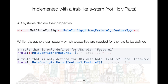The way this is implemented is with a trait-like system. AD systems declare their properties by creating a custom struct MyADRuleConfig which subtypes RuleConfig parameterized by a union of features that characterize the AD system. The rule authors can then specify the properties of the AD system required for the rule to be defined. For example, an rrule only defined for AD systems with Feature1 would have as its first argument a RuleConfig parameterized by a supertype of Feature1 — for example, a union of types which includes Feature1. An frule only defined for ADs with both Feature1 and Feature2 would have its first argument a RuleConfig parameterized by a union of the two features.